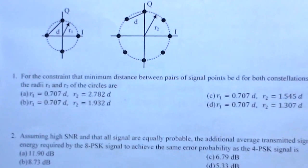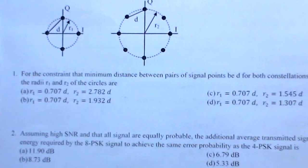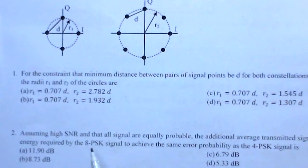The second part assumes high SNR and that all signals are equally probable. The additional average transmitted signal energy required by the 8-PSK signal to achieve the same error probability as the 4-PSK signal is to be found. There are 4 options here.